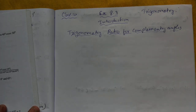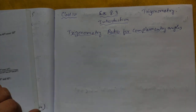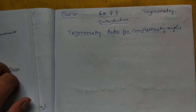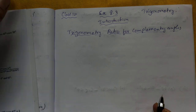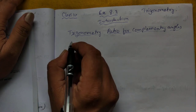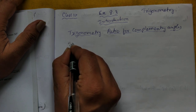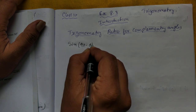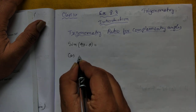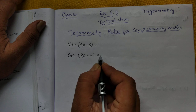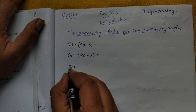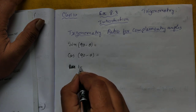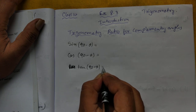Hello students of Grade 10. We'll be introducing Chapter Exercise 8.3. In this exercise you need to know the trigonometry ratios of complementary angles. A complementary angle means we have to find the value of 90 minus theta. For example, sine of (90 minus theta) will be how much? And cos of (90 minus theta) will be how much?